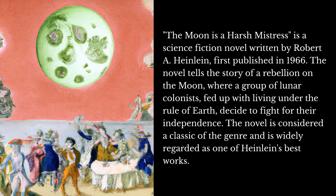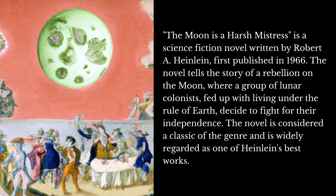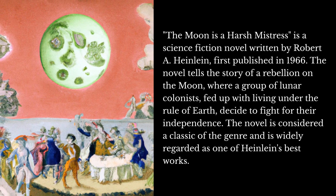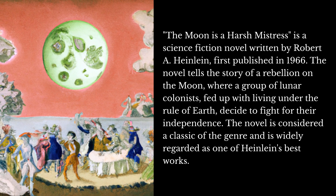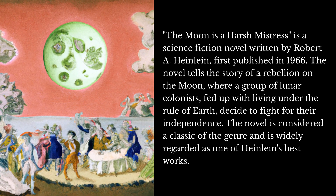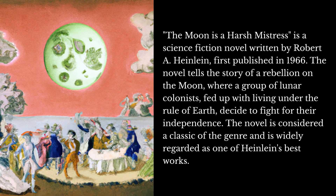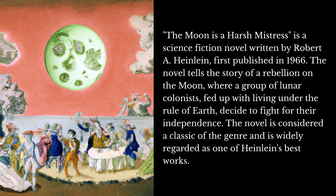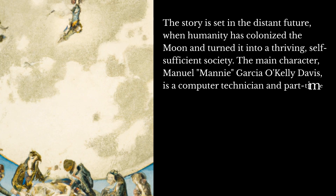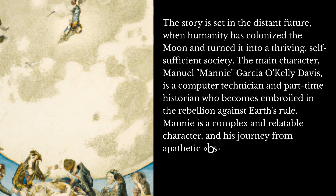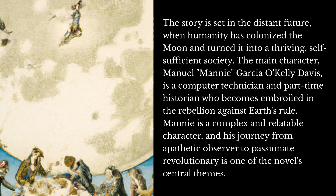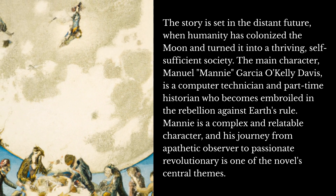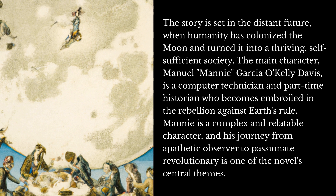The novel tells the story of a rebellion on the moon, where a group of lunar colonists, fed up with living under the rule of Earth, decide to fight for their independence. The novel is considered a classic of the genre and is widely regarded as one of Heinlein's best works. The story is set in the distant future when humanity has colonized the moon and turned it into a thriving, self-sufficient society.